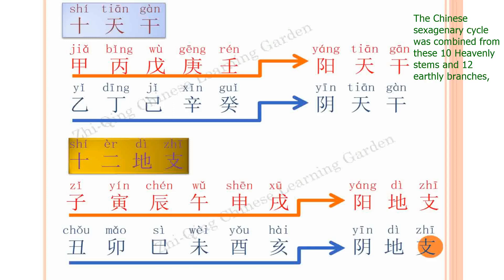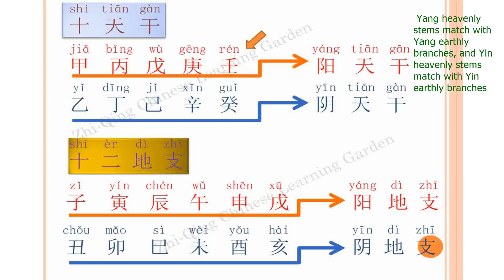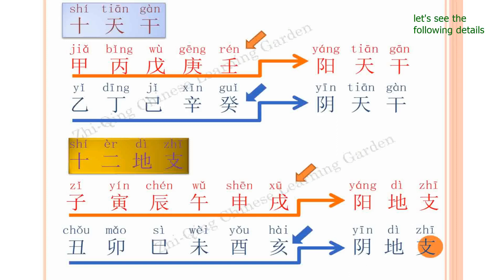The Chinese sexagenary cycle is combined from these ten heavenly stems and twelve earthly branches. Yang heavenly stems match with yang earthly branches, and yin heavenly stems match with yin earthly branches. Let's see the following details.